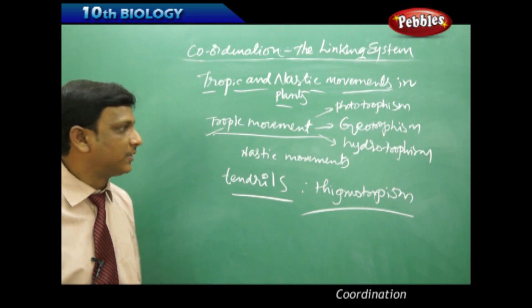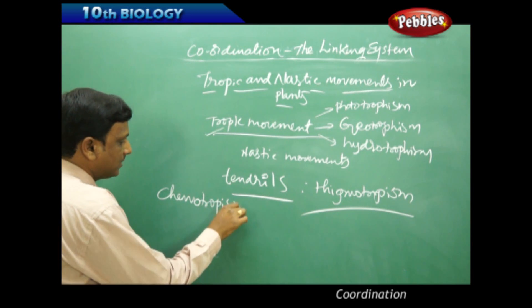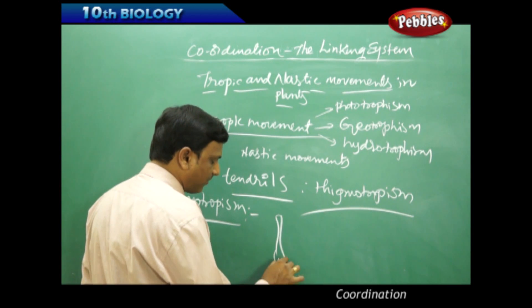Another type of tropic movement we observe is Chemotropism. Where do we observe this Chemotropism? If you observe the female reproductive system of a plant.